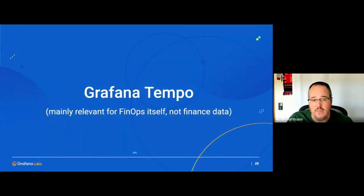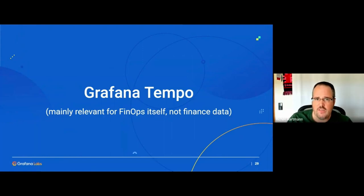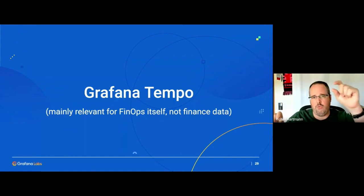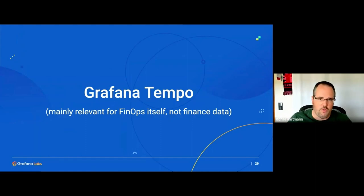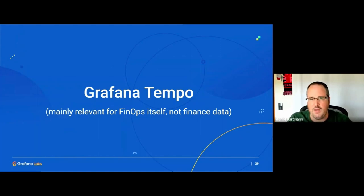Then we have Grafana Tempo. That's more relevant for the operational side, not so much for the finance data itself — just the nature of the data. Tempo is for traces and spans, which basically tells you how you walk through the program code in a particular execution — relevant for developers who want to debug, or who want to understand why they have high latency or why a certain decision was made.